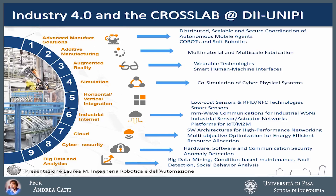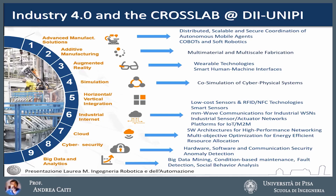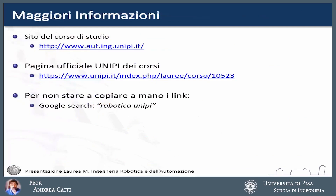This project is called CrossLab, which led to the constitution of five integrated laboratories, also called CrossLab. These are essentially integrated, transversal laboratories related to automation, responding to one or more of the key words of Industry 4.0. These are the laboratories where you will probably go to do your degree thesis or the projects associated with some exams. More information can be found on the course website, or you can search on Google for 'Robotica UniPi' to find these videos.